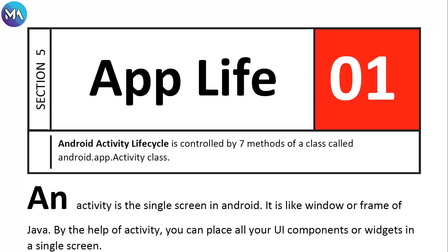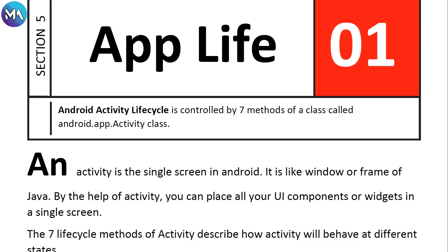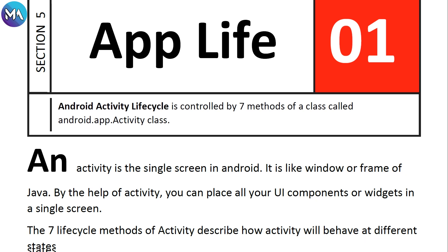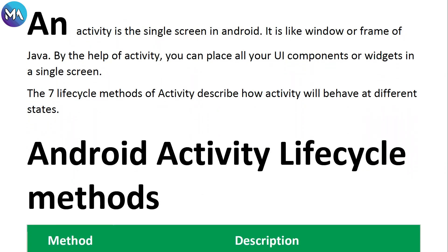Hello guys and welcome to this lesson about app lifecycle and activity lifecycle. Android activity lifecycle is controlled by seven methods of a class called android.app.Activity. These lessons are from a Master Android app found on Play Store, so download Master Android Pro from the Play Store.